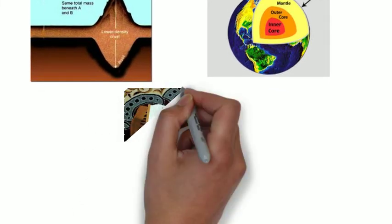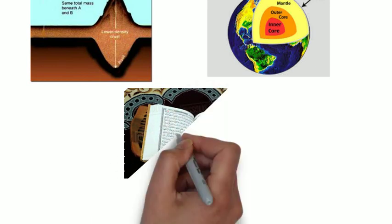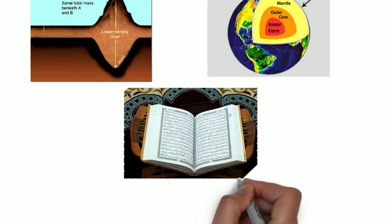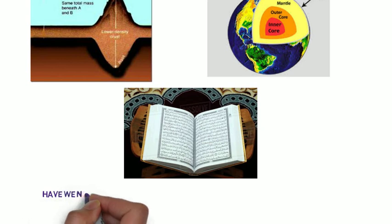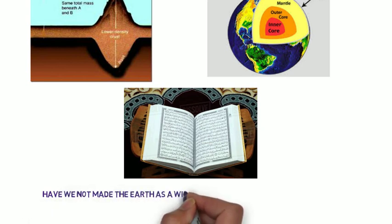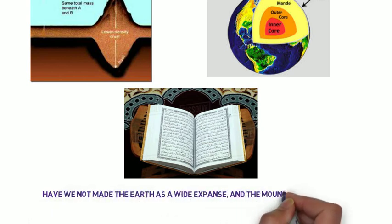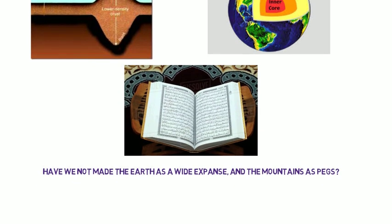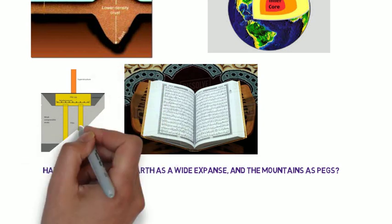More than 1400 years ago, the Holy Quran clearly explained this phenomenon by describing the mountains as pegs. Chapter 78, Verses 6 and 7: Have we not made the Earth as a wide expanse, and the mountains as pegs? The Arabic word used in this verse for pegs means acting as foundation piles like those used to anchor a tent.